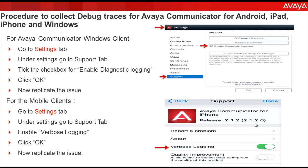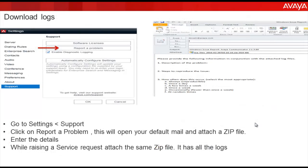To download the logs, go to settings, then support. Under support, there is a tab for report a problem. When you click on this tab, it will open your default mail and attach a zip file to the email. This zip file consists of all the required logs needed by the support organization to analyze the issue.